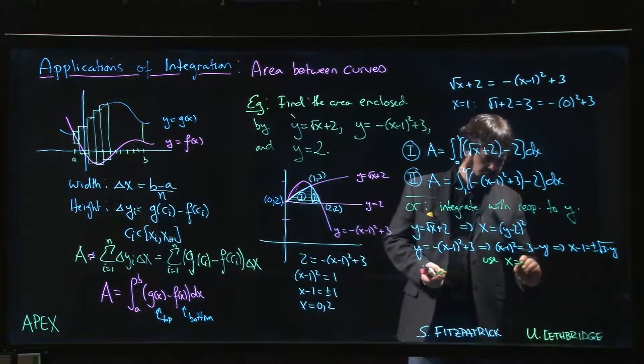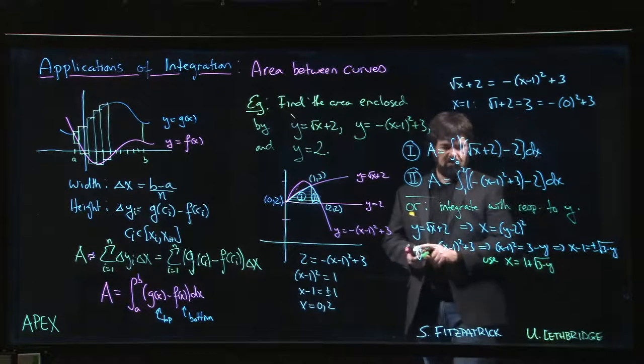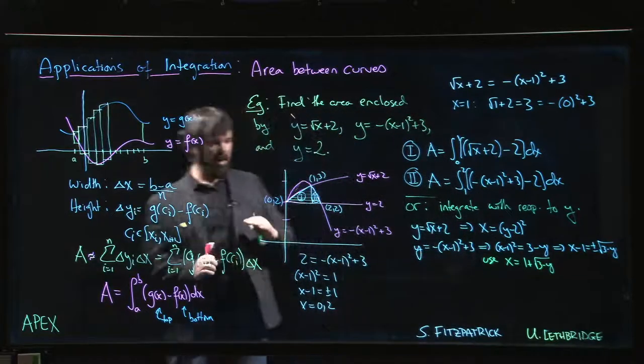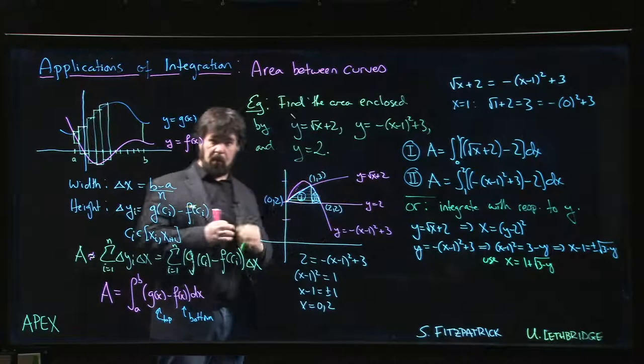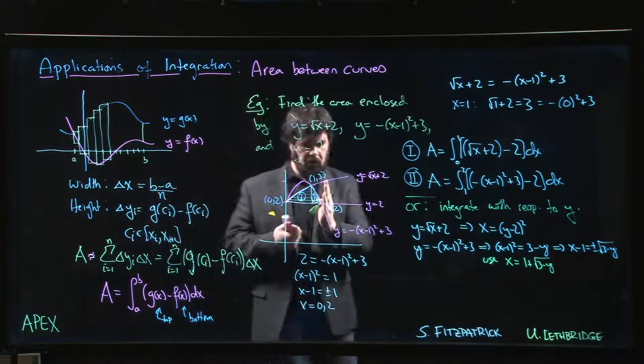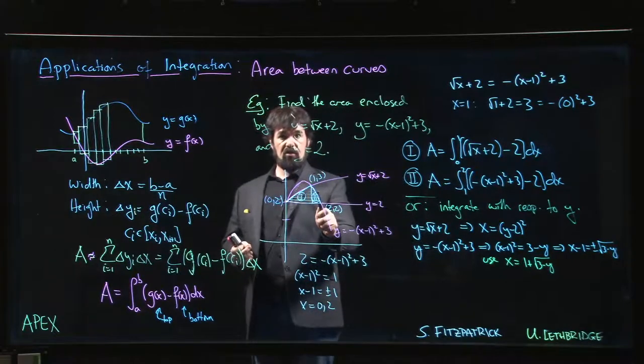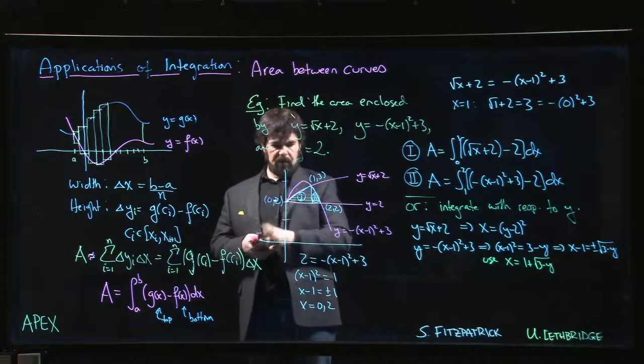So we want to use x = 1 + √(3-y). Okay, and now if you kind of tilt your head sideways, because you kind of want to think in terms of upper minus lower, maybe now you're thinking right minus left. Because you want positive area, we want larger x values minus smaller x values. This should play the role of the upper curve, this plays the role of the lower curve.